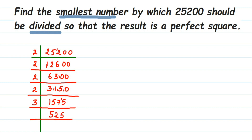The number ends with 5, so let's try dividing by 5. 5 × 5 = 25, and taking 25 together gives us 105. So we've arrived at 105 after dividing by 5.